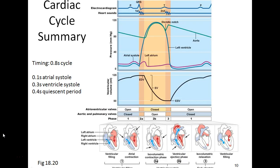On this last slide, all phases are stitched together in a summary of the cardiac cycle. This cycle is about 0.8 seconds long: 0.1 seconds is taken up by atrial systole, 0.3 seconds by ventricular systole, and 0.4 seconds is a quiescent period — a pause before the cycle repeats.